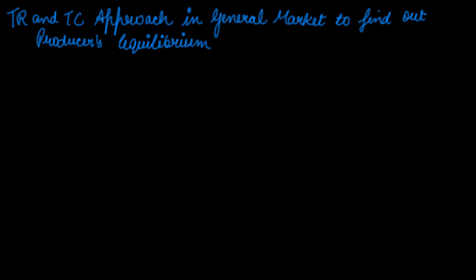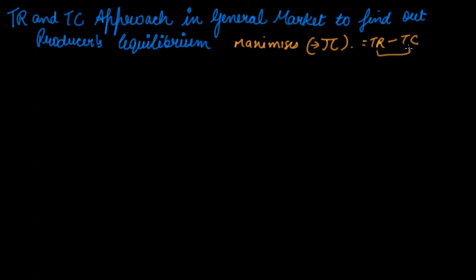The producer is at its equilibrium when it maximizes its profit — we denote profit by pi. Profit is the difference between TR and TC, so when the difference between TR and TC is maximum, the producer is at its equilibrium. That is simple to understand, but when the question comes in your board exam, you need to present it properly on the answer sheet.